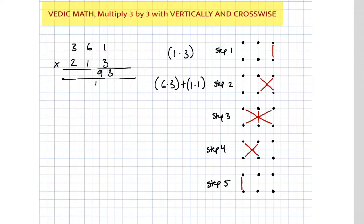Step number 3, we have vertically and crosswise. So here's our vertical, here's our crosswise. So that means this number is gonna be multiplied with this one. So if we look over at our problem, that's the 2 times 1 plus 3 times 3 plus 6 times 1.